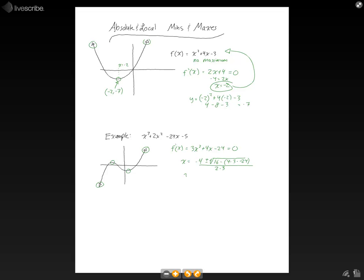When we simplify this, we'll get x equals negative 4, plus or minus the square root of 304, all over 6.